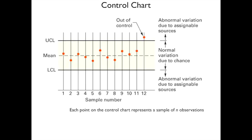Control charts indicate where you want observations to be. A sample is acceptable anywhere between the upper control limit and the lower control limit. All samples shown are good, except for one that is out of control.